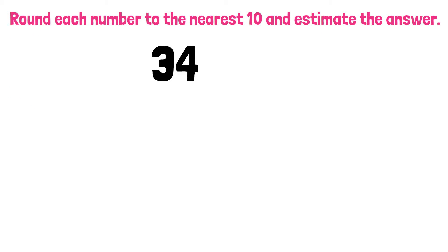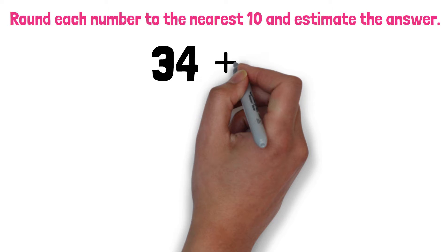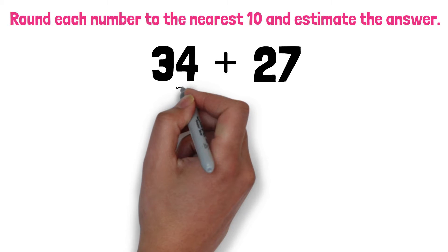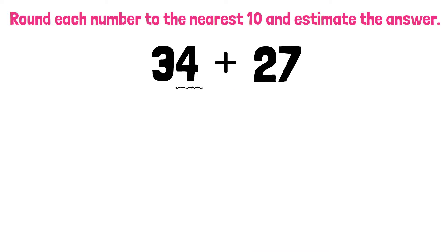We have 34 plus 27. Since we are rounding to the nearest 10, we need to look at the 1's digit.